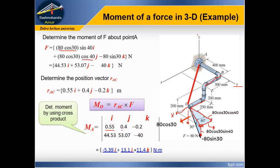Here, 0.55, 0.4, minus 0.2 position vector. Finally, M about point A in Cartesian form equals minus 5.39 i plus 13.1 j plus 11.4 k Newton-meter.